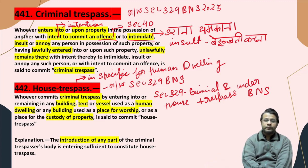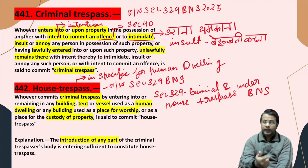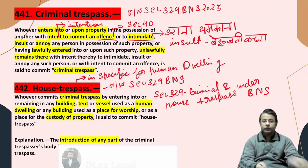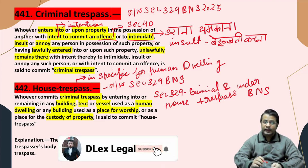442 जो है, यह specific house trespass की बात कर रहा है। वहाँ पर 441 में आपकी किसी भी तरह की property हो सकती है, but यह in specific house trespass की बात कर रहा है — 442। अब इसको पढ़ते हैं: whoever commits criminal trespass — criminal trespass मतलब सारे वो ingredients जो 441 के हैं, वो 442 में आ जाएंगे।